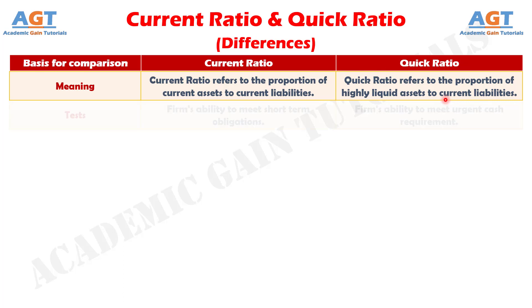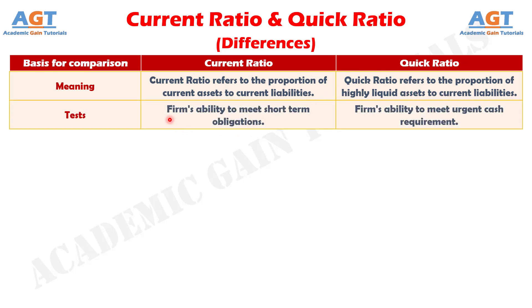Number two: while the current ratio analyzes the firm's capability in meeting its short-term obligations, the quick ratio measures the company's capability in meeting urgent cash requirements.